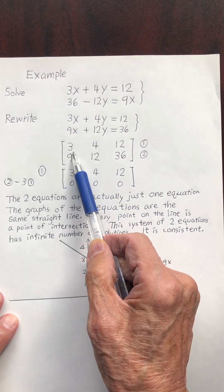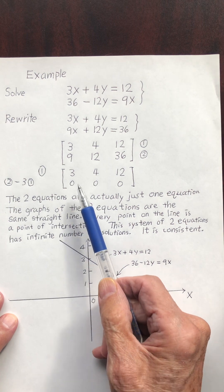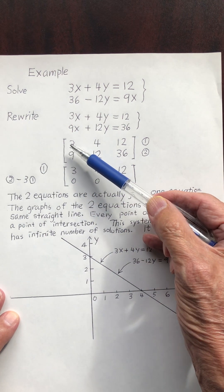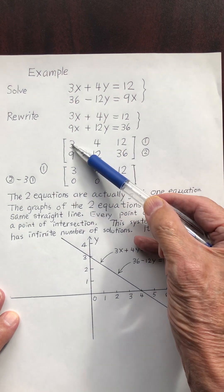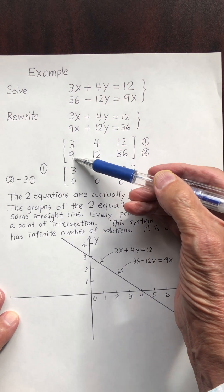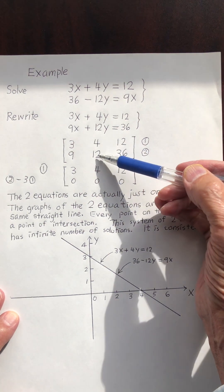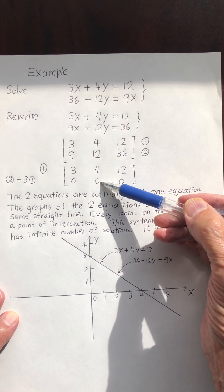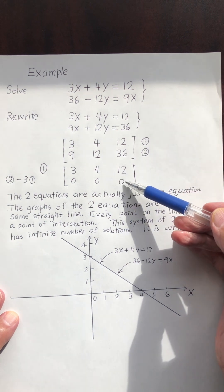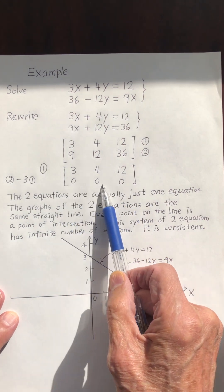I copy row 1: 3, 4, 12. I want the 9 to become 0, so I multiply row 1 by 3 and subtract from row 2. So: 9 minus 9 is 0, 12 minus 12 is 0, and 36 minus 36 is 0. I get a row of all zeros.